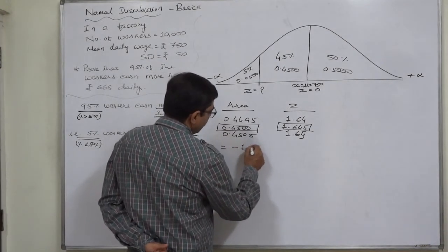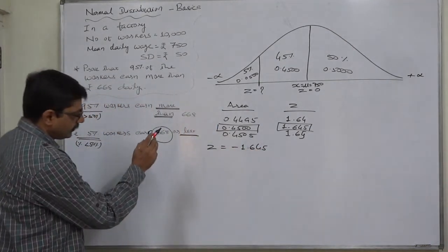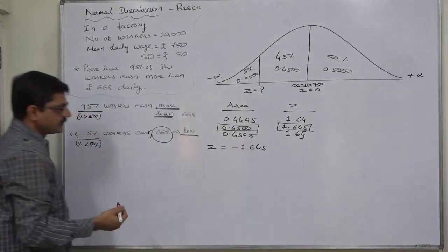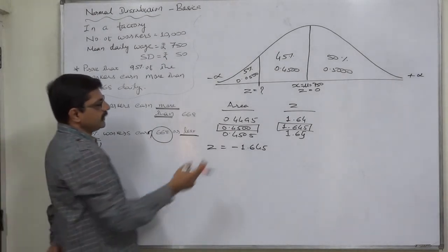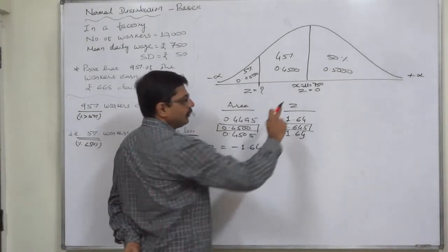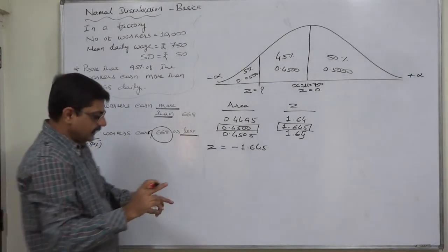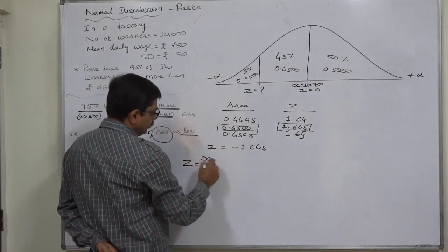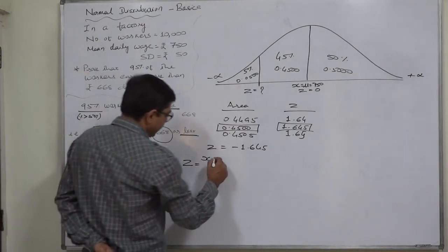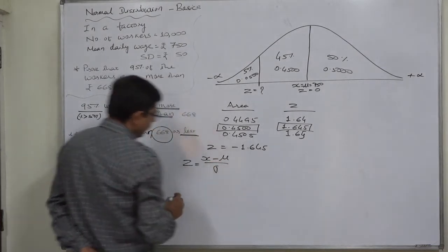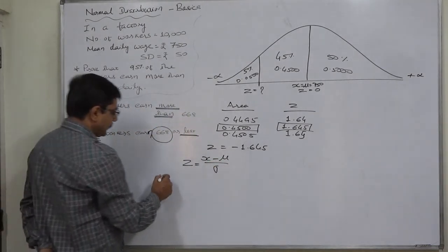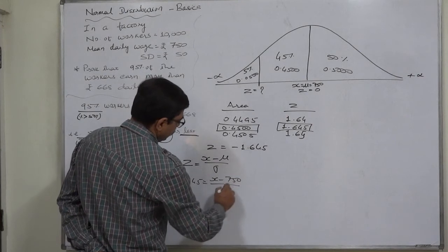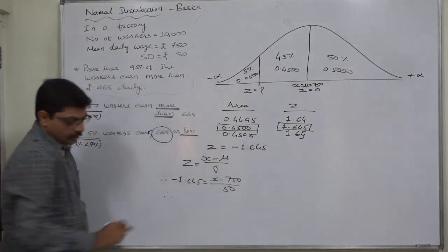It must be negative 1.645 because the relevant values fall in the left-hand side region, and where the variable X takes a value less than the mean, the Z score is always negative. We know that the value of Z can be calculated through the Z score formula: Z = (X − mean) / standard deviation. Substituting: −1.645 = (X − 750) / 50.